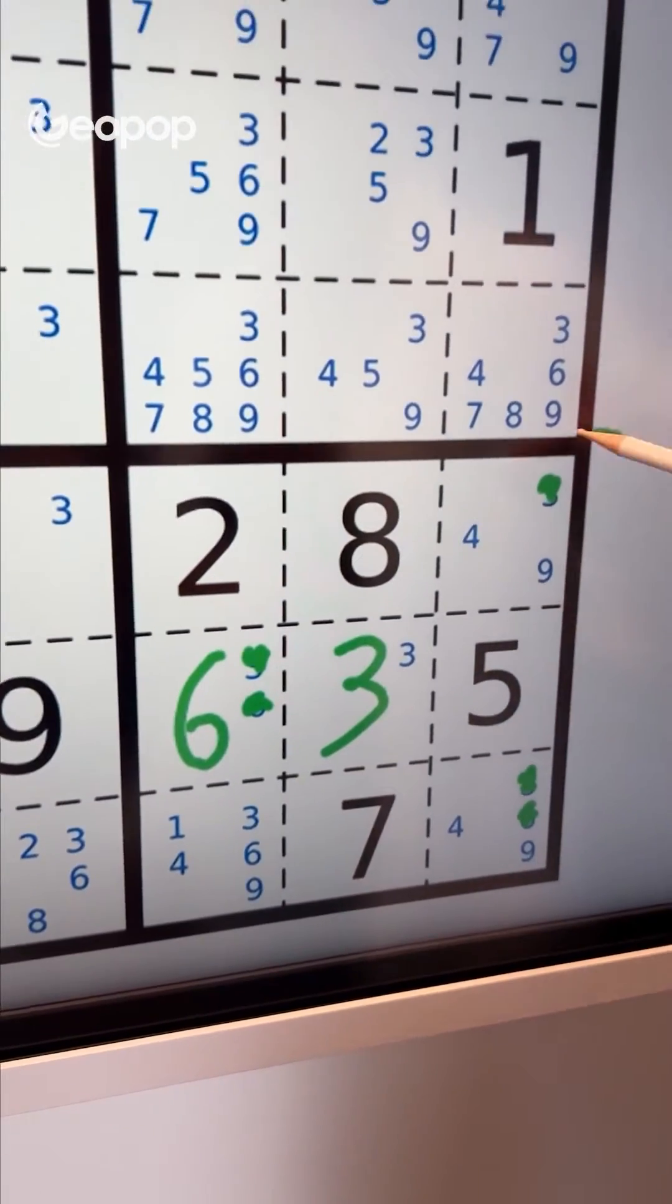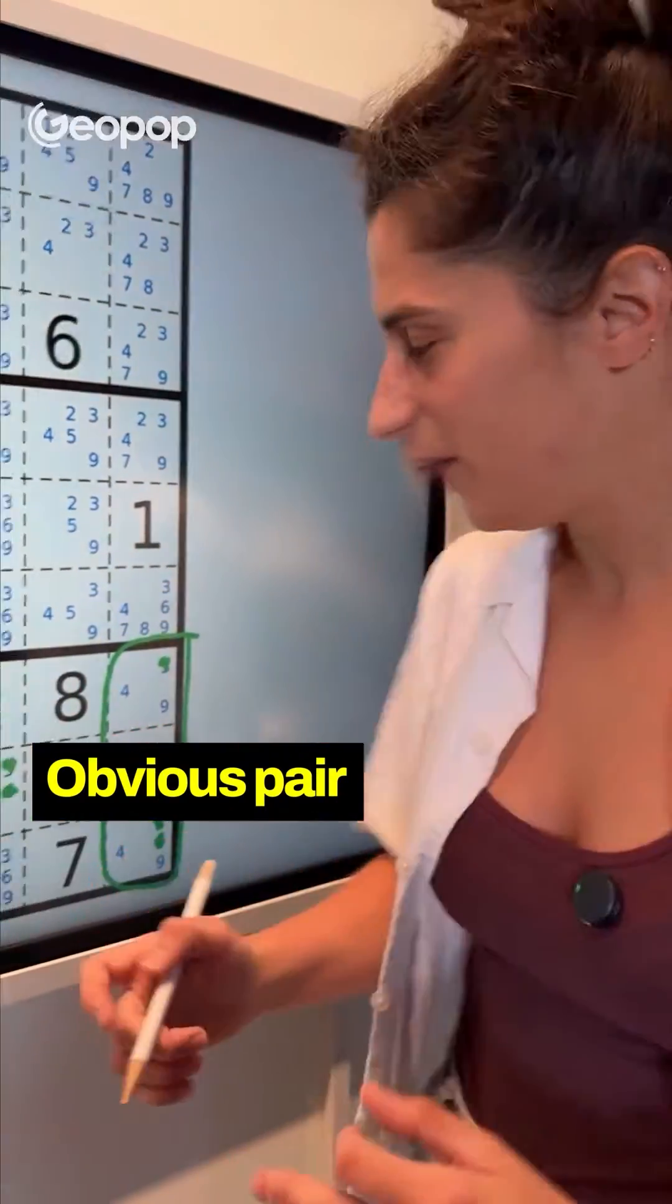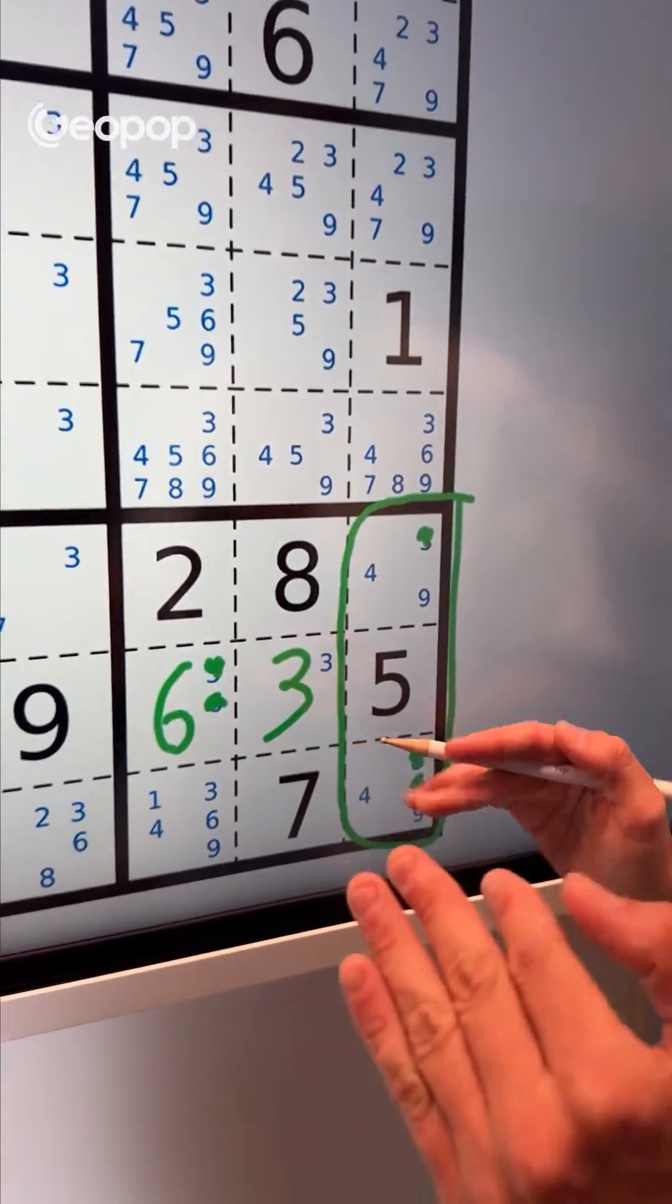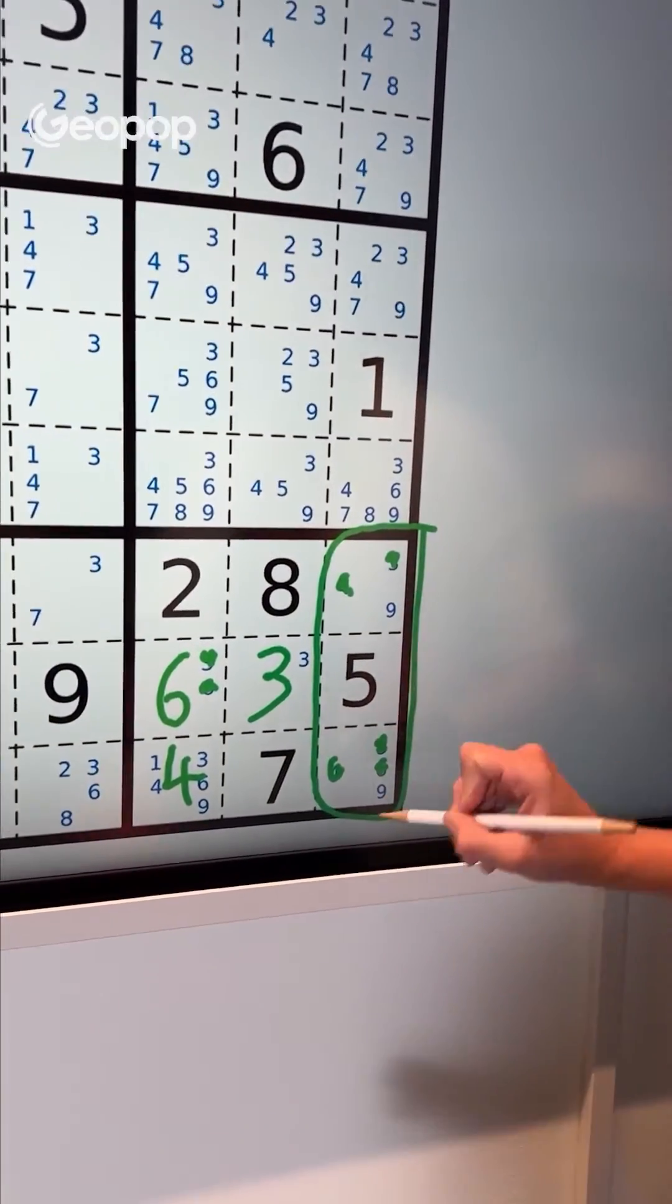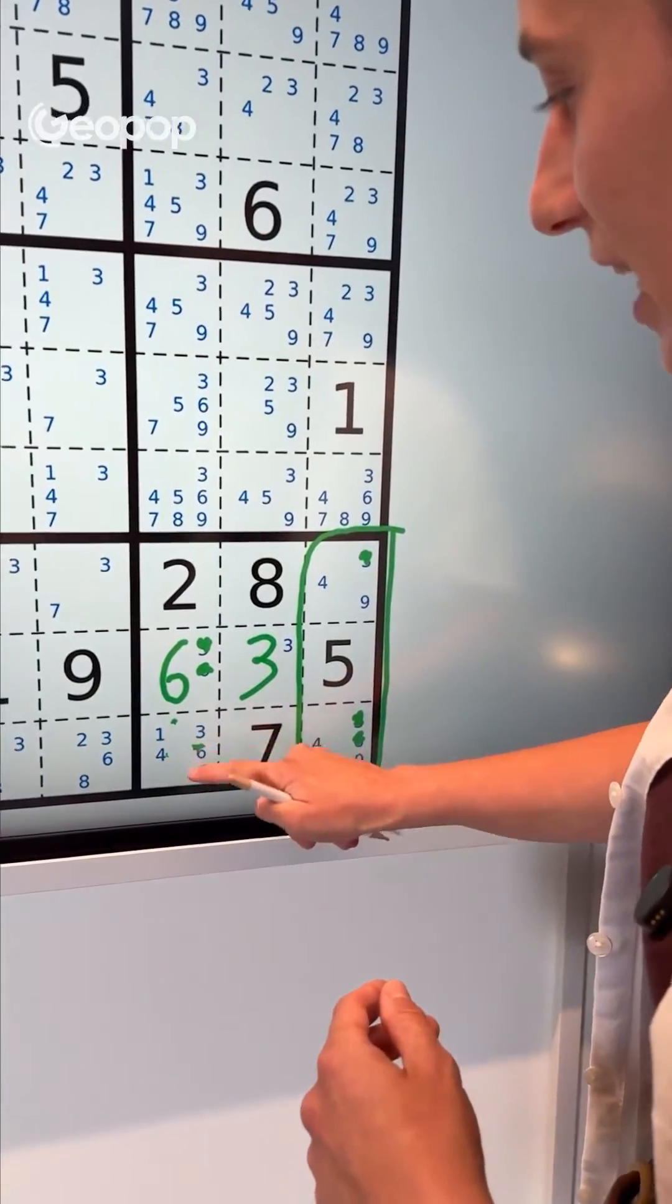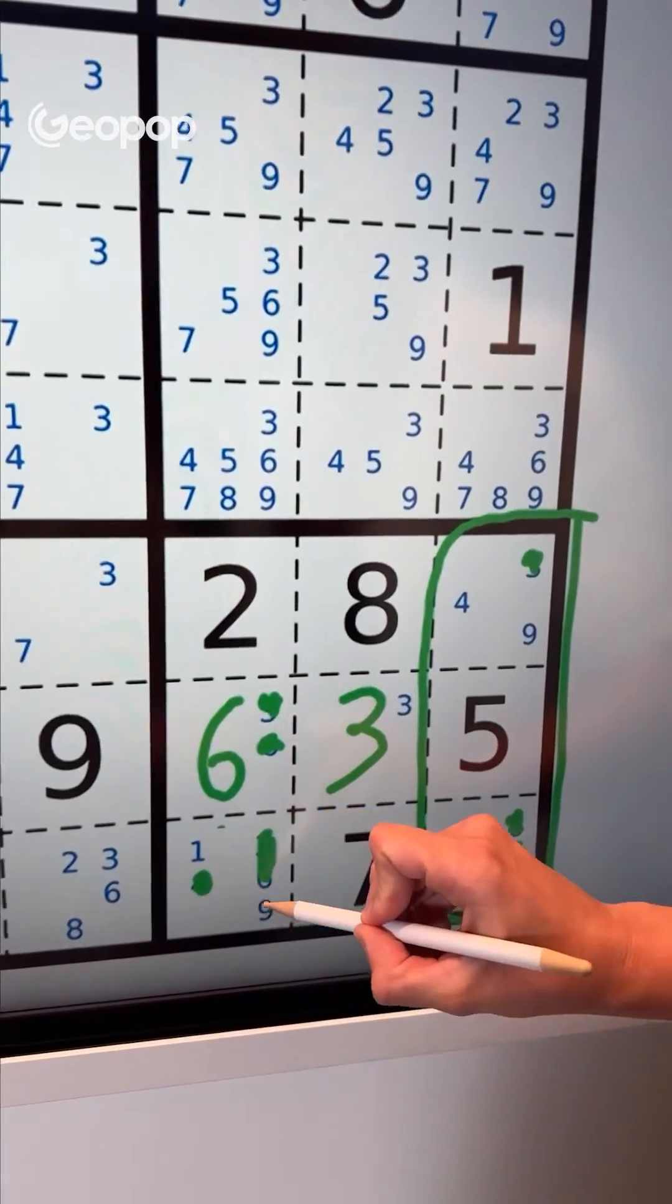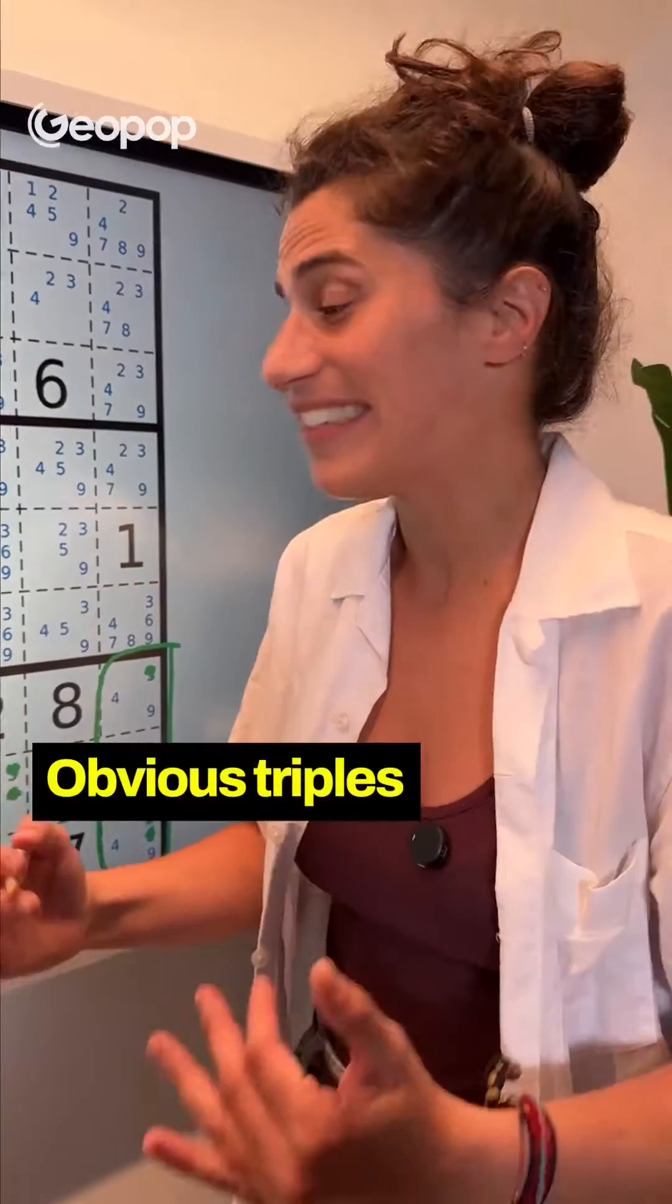Now here's something very interesting appears, and it's what we call an obvious pair. If there are 2 cells in which only the same specific pair of numbers are possible, then those 2 numbers have to be in those 2 cells. Because if the 4 were here, then we'd cancel it from these 2. But 9 can't be in both cells, right? So, in this situation, we're sure that 4 and 9 will be here. So we can erase 3 and 6, because we already know where they are, and 4 and 9, because they'll be here, and we're left with 1 in the cell.